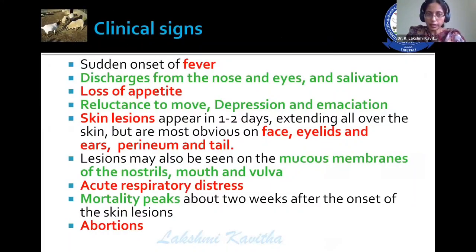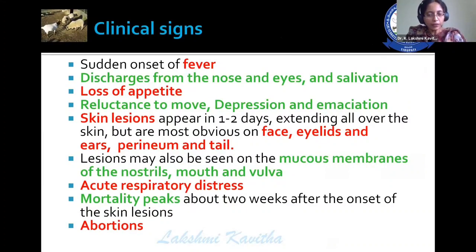Clinical signs include sudden onset of fever, discharges from the nose, eyes and salivation, loss of appetite, reluctance to move, depression, and emaciation. Skin lesions appear one to two days later, extending all over the body, and are most obvious on skinless portions like the face, eyelids, ears, perineum, and tail.